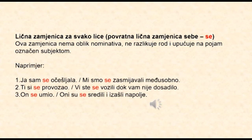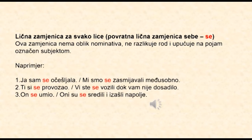Pored navedenih, postoji i lična zamjenica za svako lice, a to je povratna lična zamjenica sebe ili se. Ova zamjenica nema oblik nominativa, ne razlikuje rod i upućuje na pojam koji je označen subjektom. Na primjer: ja sam se očešljala; ti si se provozao; on se umio; mi smo se zasmijavali međusobno; vi ste se vozili dok vam nije dosadilo; oni su se sredili i izišli napolje.